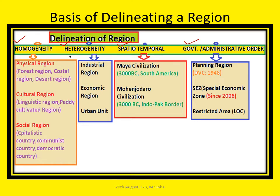Delineating of the region may be based on homogeneous attributes — homogeneity in physical attributes or in cultural or social indicators. For physical indicators, we can take examples such as forest area, mountain area, hilly area, and coastal area. Those are homogeneous areas in terms of physical attributes.